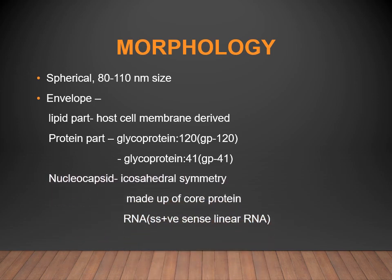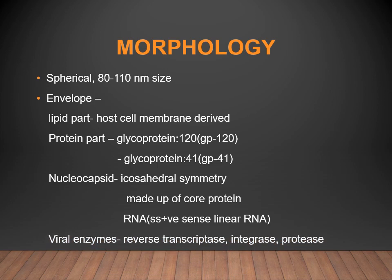Then comes the nucleocapsid, which has icosahedral symmetry and is made up of a core protein. Within this core protein, there are two strands — that is, two positive-sense, single-stranded, linear RNA copies. Certain enzymes are also present: reverse transcriptase, integrase, and protease — all included in the nucleocapsid.